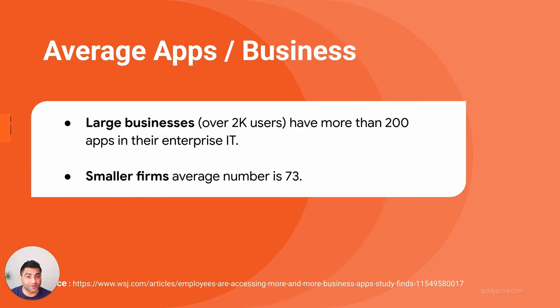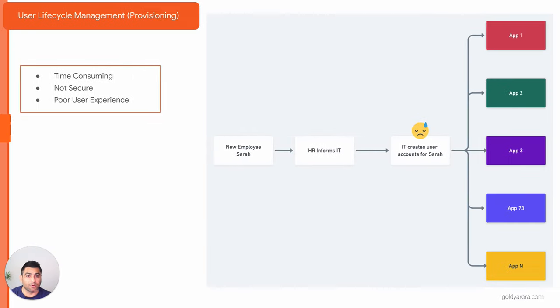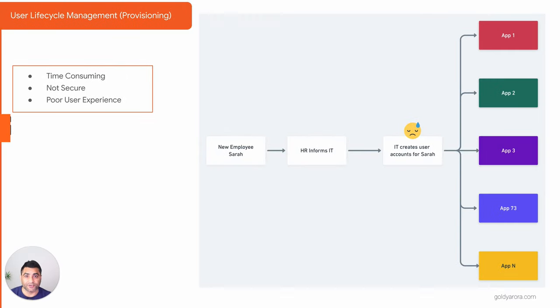Based on an article I read from the Wall Street Journal, an average user is consuming more than 40 to 50 applications to get their job done. That is really painful for users and also for admins managing these multiple applications, especially when you do not have a centralized identity provider in place. For example, when a new employee joins your organization, the HR team informs IT, who must then go to all of those applications and create the new user account in all of them manually — very time consuming and very painful.